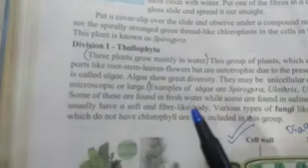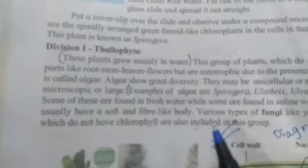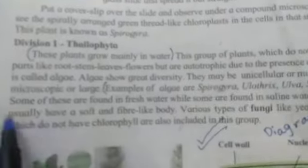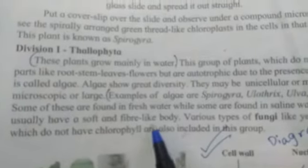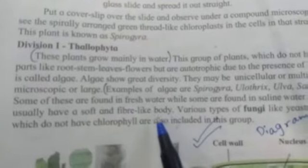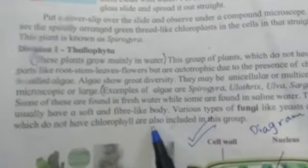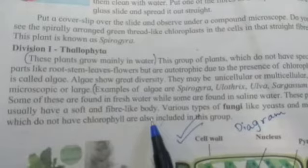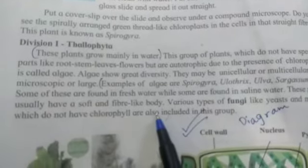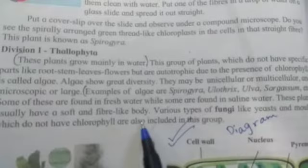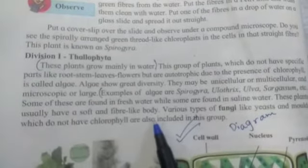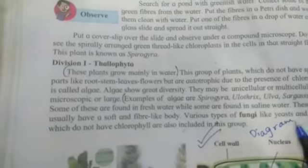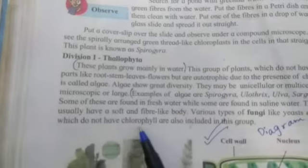Some types are found in fresh water and some are found in salt water — they are found in both places. These plants usually have a soft and fiber-like body. When it rains, you may notice greenish growth on walls nearby — that is a type of algae. It is very soft to the touch. Various types of fungi such as yeast and molds, which do not have chlorophyll, are also included in this group.